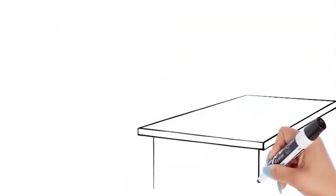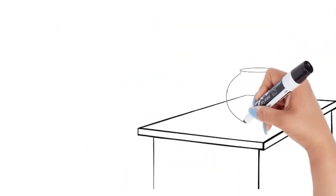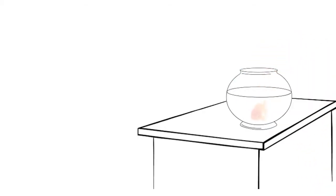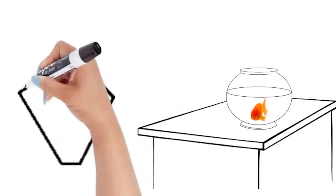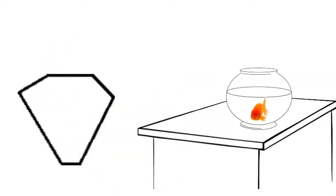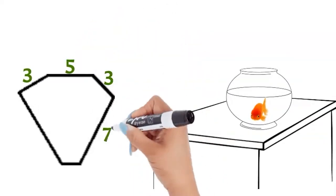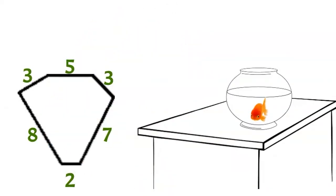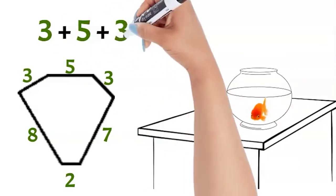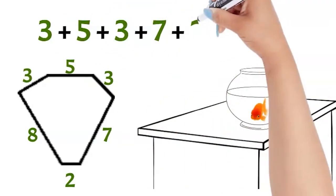What about irregular shapes? Down here in the fishbowl: how do I find the perimeter of my bowl? You can find the perimeter the same way as any other shape — add up all the side lengths. So let me get this straight: I just add 3 plus 5 plus 3 plus 7 plus 2 plus 8?